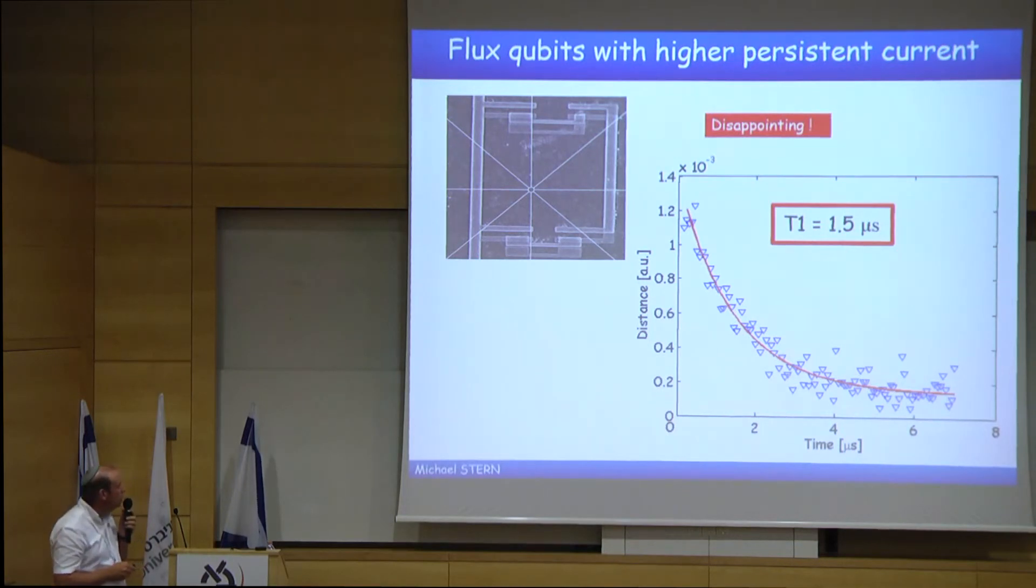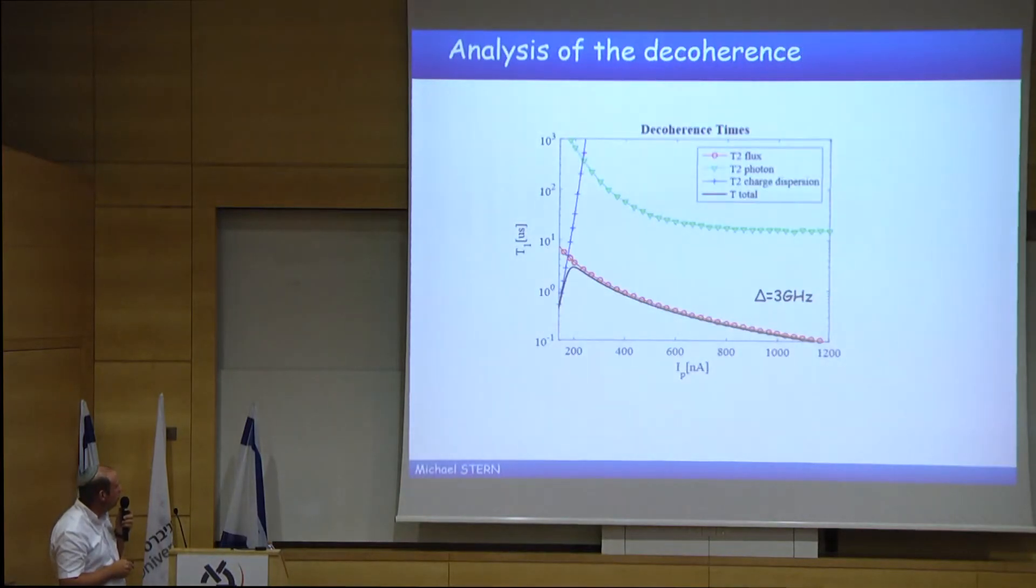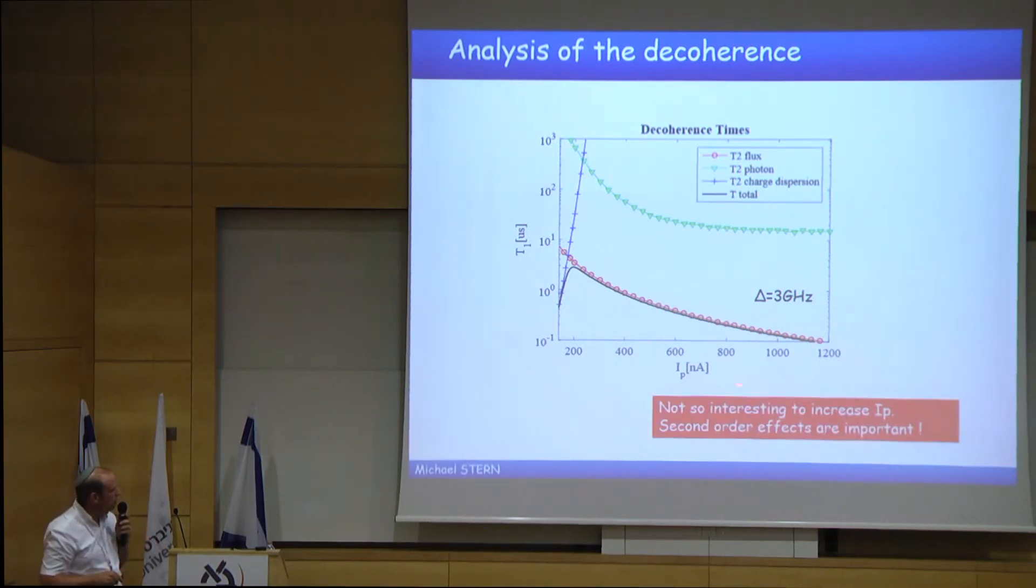In order to understand that, we came back to the model of a flux qubit. And first of all, we looked at, we tried to analyze the decoherence of a flux qubit. The decoherence of a flux qubit, there are several contributions. One is coming from photon noise in the cavity. One is coming from charge dispersion, charge noise. And one is coming from flux noise. Well, I said before that flux qubit is immune to flux noise. But that's true only at first order. Now we take into account the second order of the flux noise. And we get that, indeed, increasing I_P is not so interesting, in fact. Because we have second order effects. Above I_P of 200 or 300 nanoampere, we are completely limited by this flux noise.